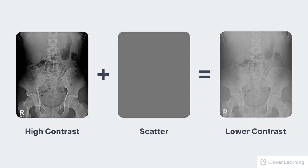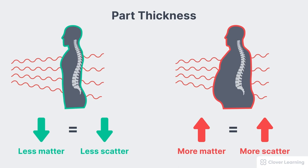So when does Compton scattering occur? Remember this principle: more matter equals more scatter. For example, consider part thickness — with more matter in the way, more photons interact by Compton scattering. This is the main reason that larger patients have more scatter and therefore lower image contrast. More Compton scatter is created in thicker patients: there's more matter, therefore more scatter.